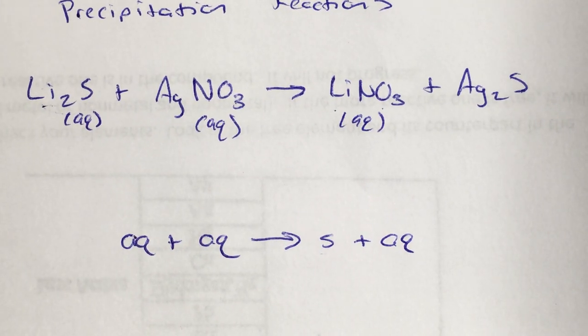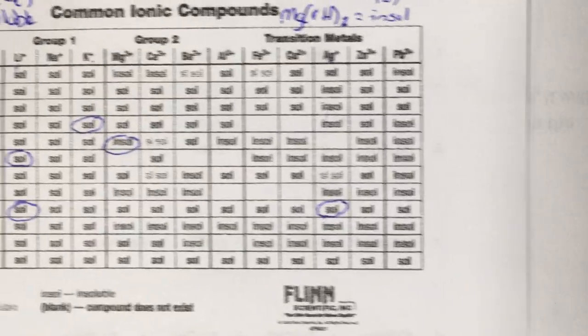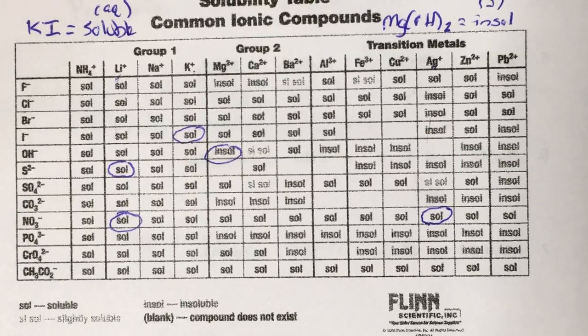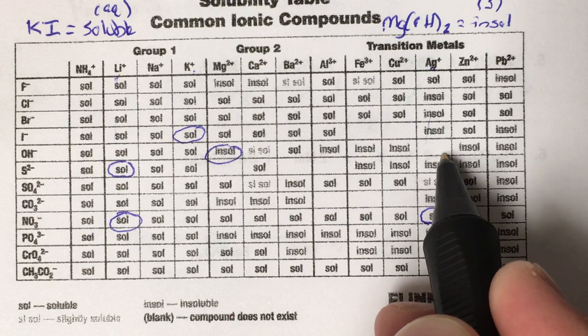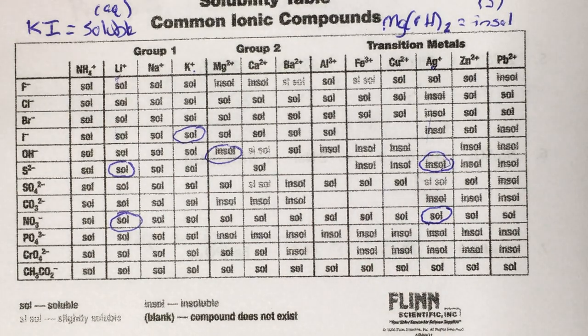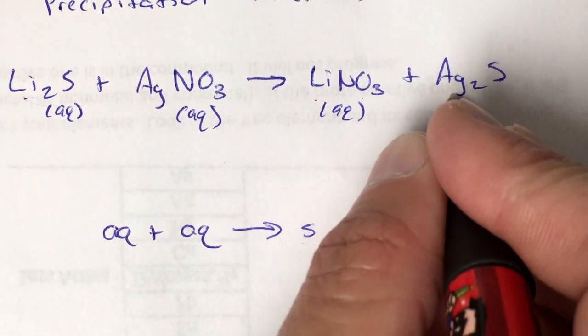And then the silver sulfide. So again, back to the silver column over here. Down to the sulfur. Insoluble. That means this is an S.